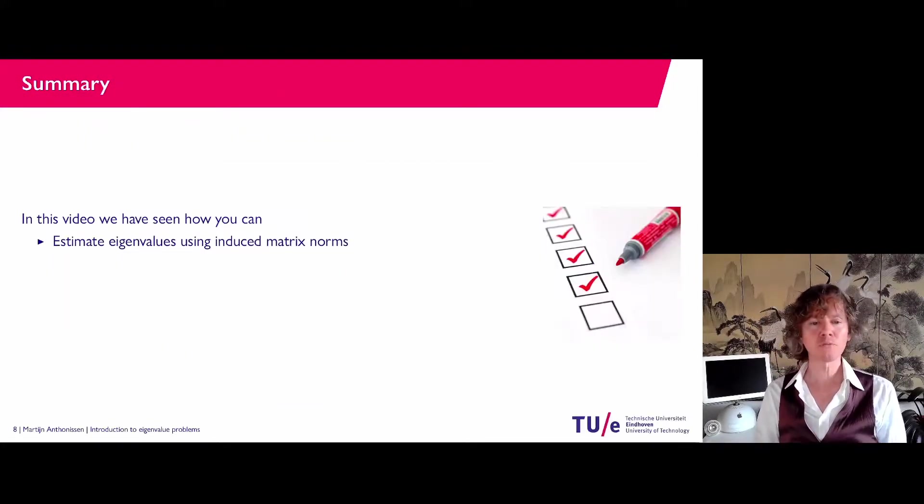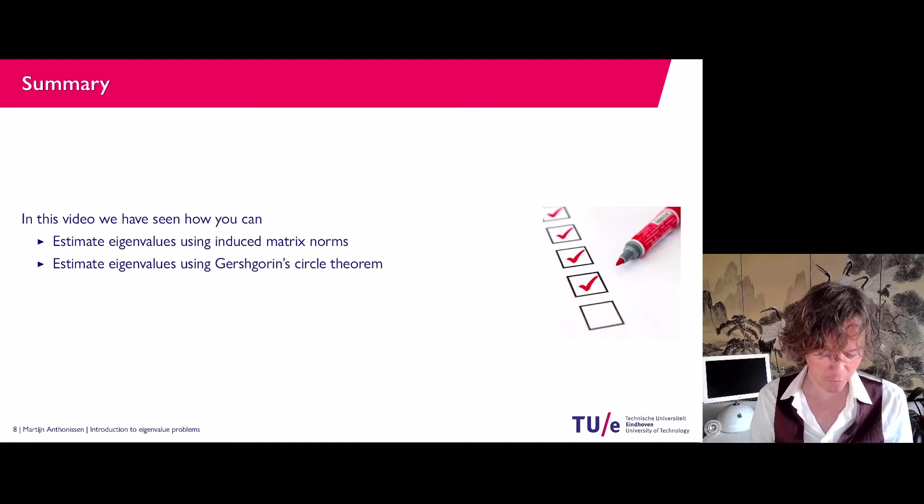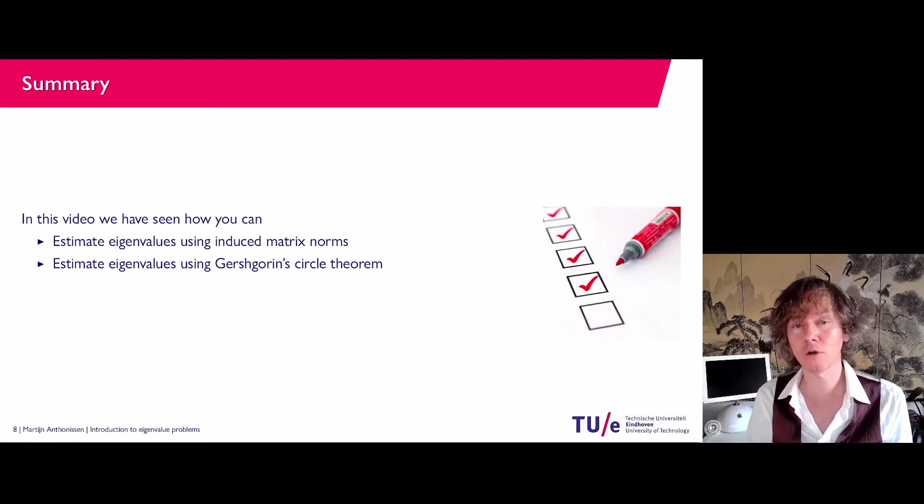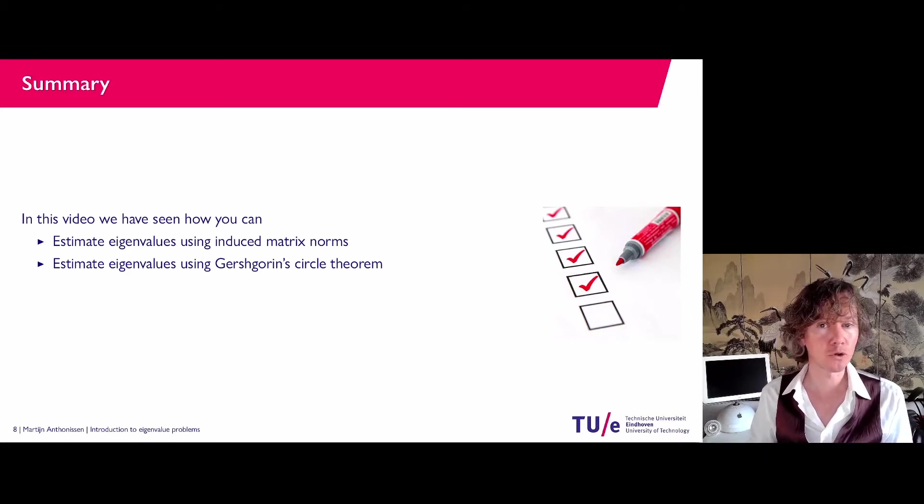So that wraps up this first introductory video. What we have seen is that you can estimate the eigenvalues using induced matrix norms. So the 1, 2, the infinity norm give an upper bound for all the eigenvalues. And we have seen a sharper estimate in the form of Gershgorin's circle theorem. So nothing about numerical methods yet. That will be the topic of future videos. But this was an introduction showing you why eigenvalues are important. And that without doing many computations, you can already have an idea of where the eigenvalues are located. So that wraps up this video. And I'll happily see you in the next one.